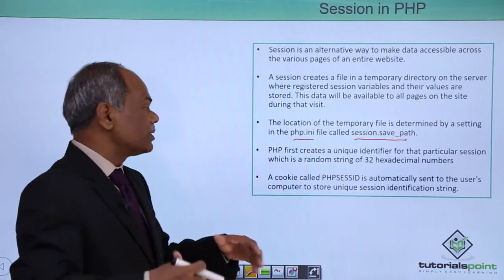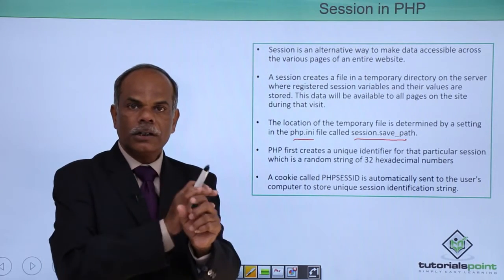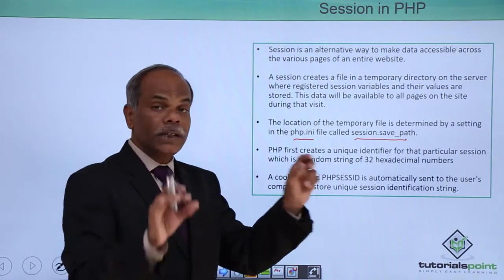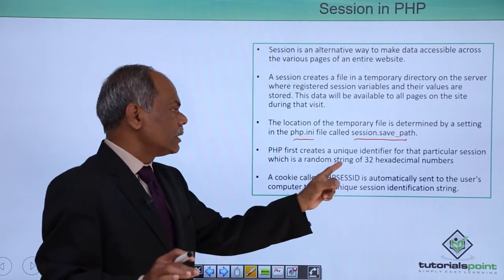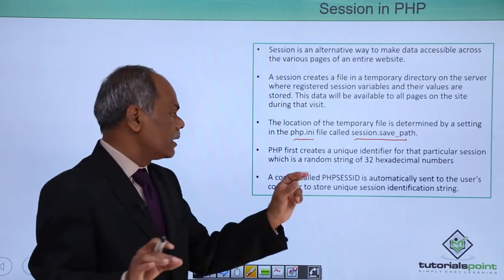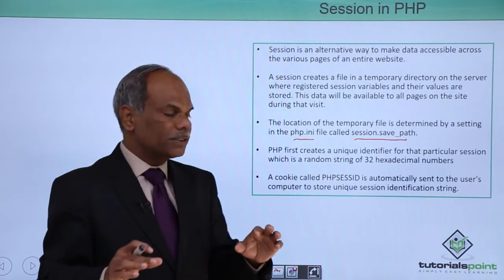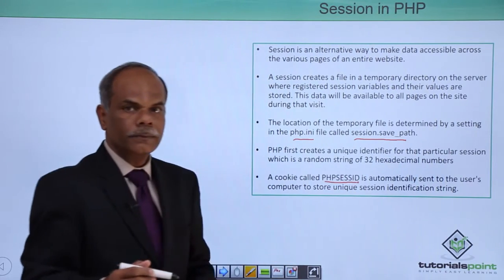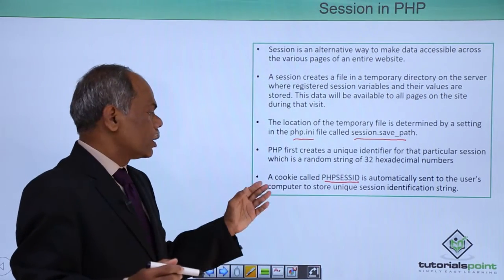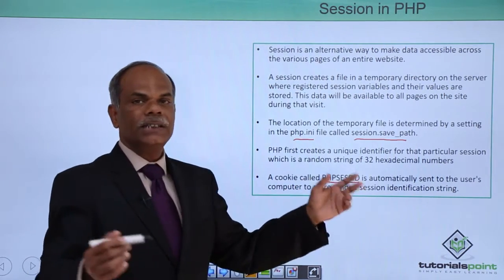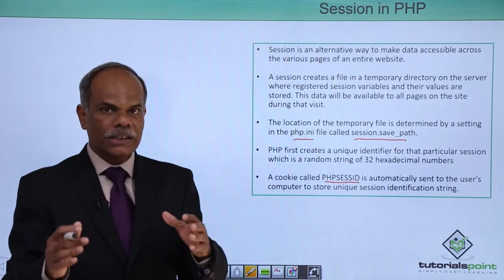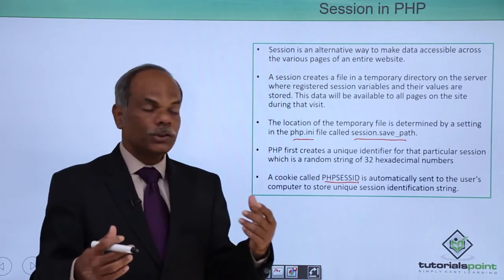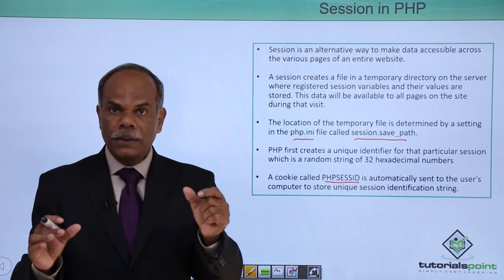PHP first creates a 32-character long string. It creates a unique identifier — 32 hexadecimal digits — which is a randomly created string called the PHP session ID (PHPSESSID). A cookie called PHPSESSID is automatically sent to the user's computer and stored there. It is used for identification of the PHP session.